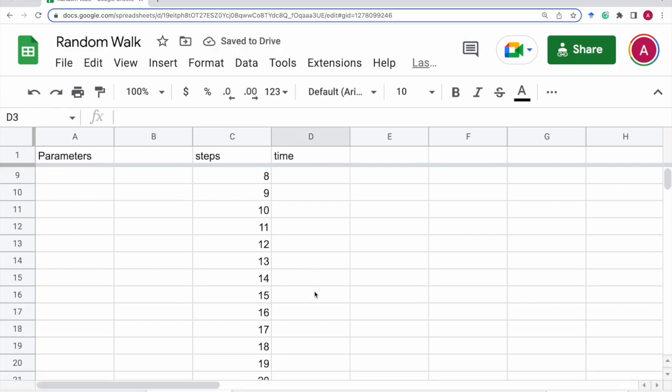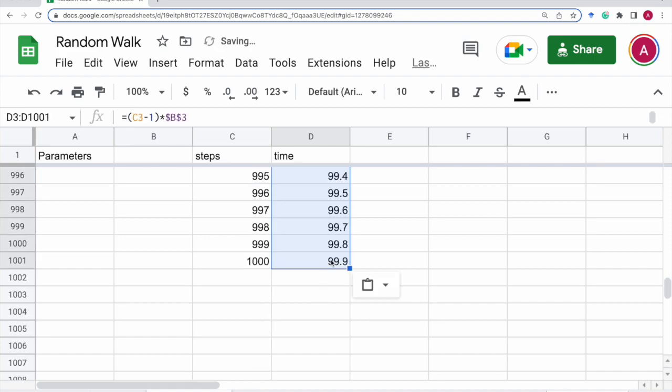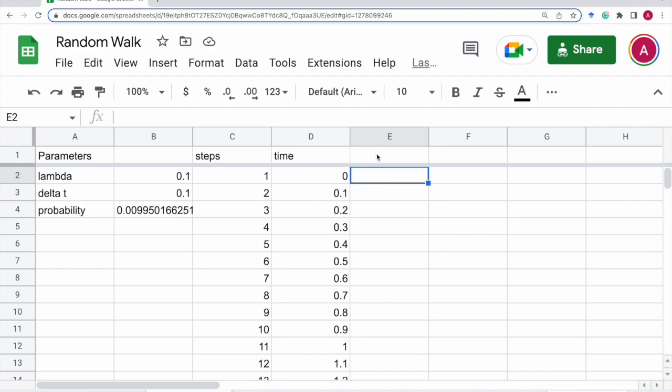So let's copy this to all the rows here up to 1000. And so next we want to decide whether to increment or not.